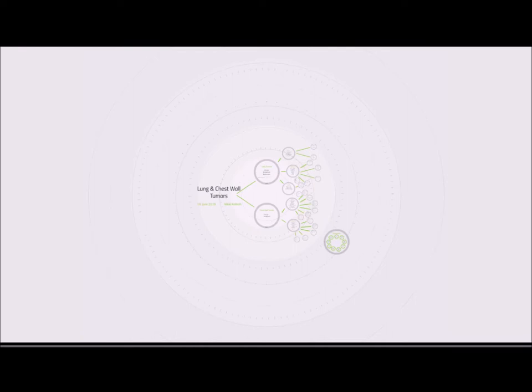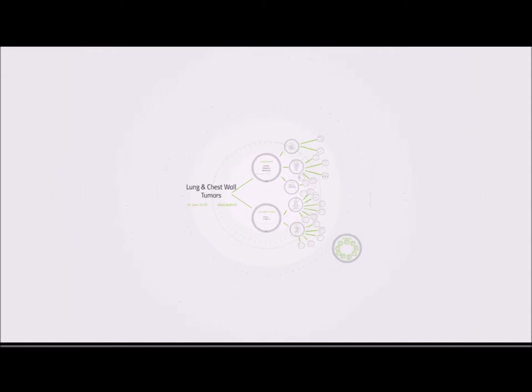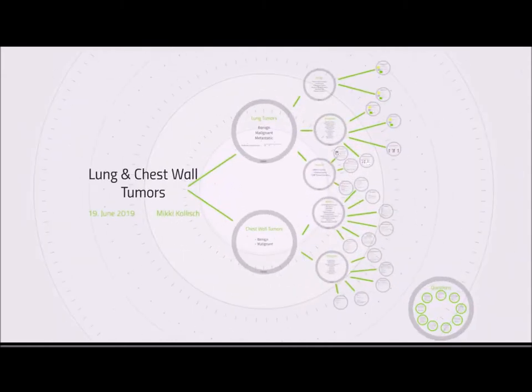Malignant chest wall tumors are pretty much anything with 'sarcoma' in the name. An important problem with chest wall tumors is that regardless of classification, type, or tissue of origin, many tend to be asymptomatic and are often not found until very late and usually incidentally. The only exception are masses originating from the nerves, which may present with pain.